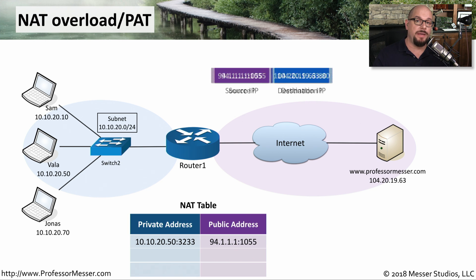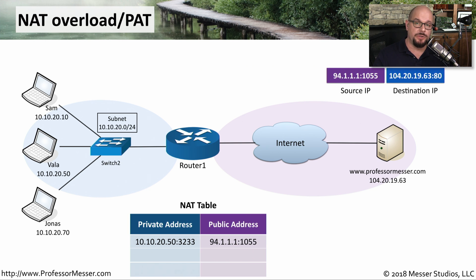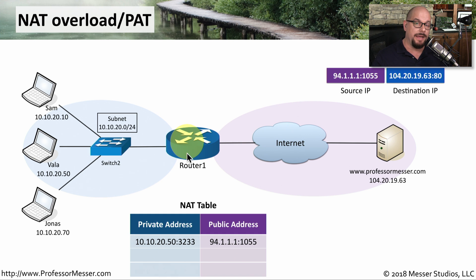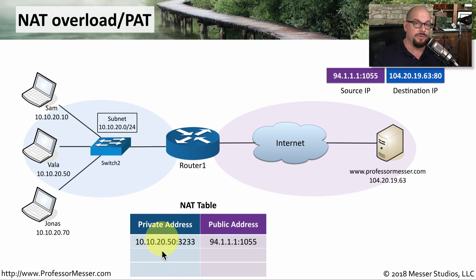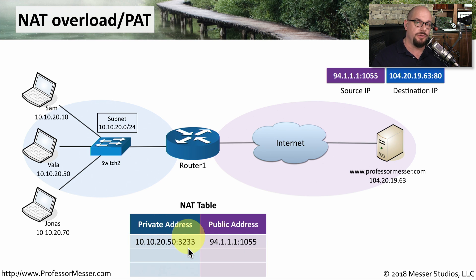Now that we have an external IP address, the packet is routed properly to professormesser.com. When professormesser.com replies back to Vala, the traffic hits the router again. The router looks at the NAT table, makes the proper changes back to Vala's internal IP address, and the response is sent back to Vala at 10.10.20.50 using the original port number of 3233.